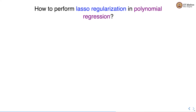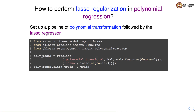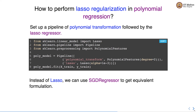Let's see how to perform Lasso regularization in polynomial regression. Just like Ridge, we set up a pipeline of polynomial transformation followed by the Lasso regressor. We instantiate a pipeline object with polynomial transformation specified by a PolynomialFeatures object, and then Lasso as the second step, constructed with a specified regularization rate. Instead of Lasso, we can also use SGDRegressor to get an equivalent formulation.